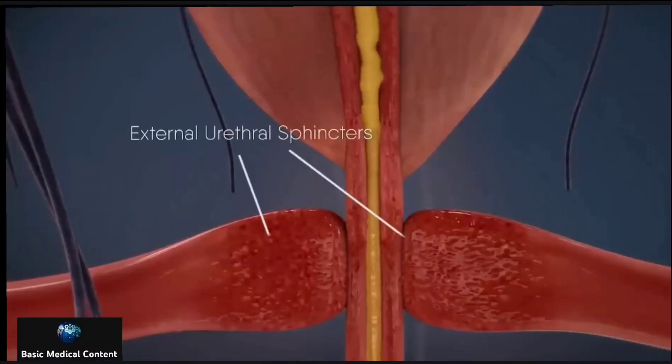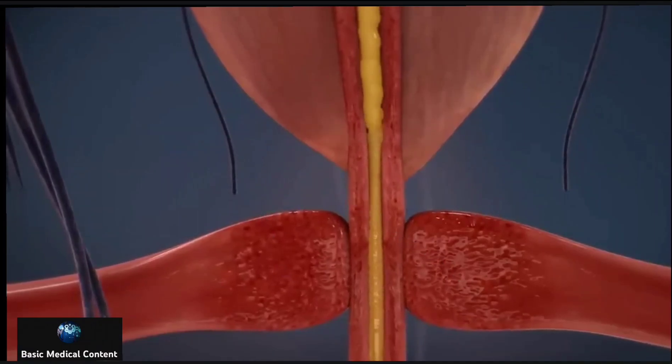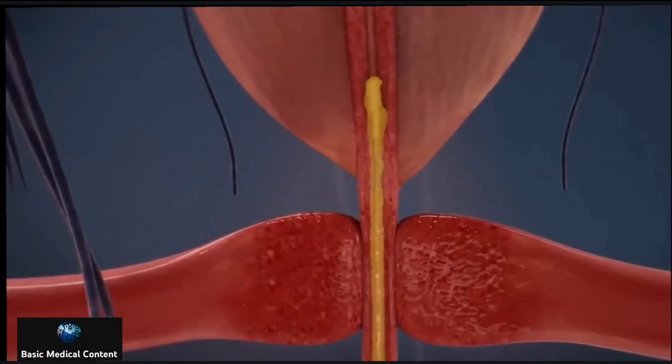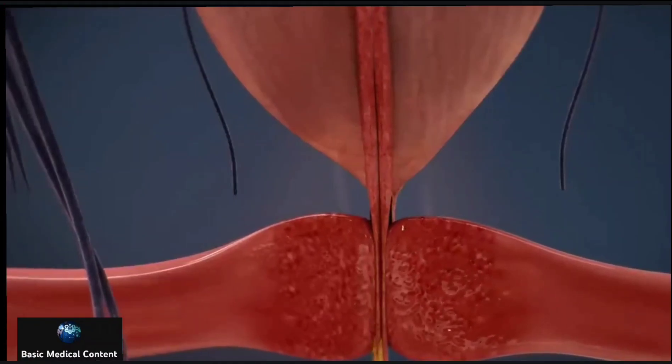The urethral sphincters, either male or female, are two muscular structures that regulate the outflow of urine and help keep urine from leaking by closing tightly.